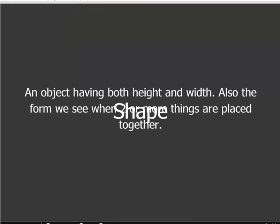The next principle of design is called shape — an object that has both width and height, or also the form we see when two or more things are placed together. The shape of things can be interesting because when things have an interesting shape, our eyes are drawn towards them. Shape can also be the layout of how things are laid out on the page. Let's look at some examples of how interesting shape can draw a viewer's eye into an advertisement.